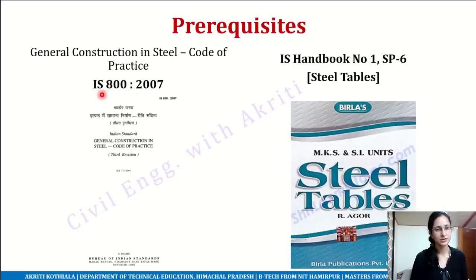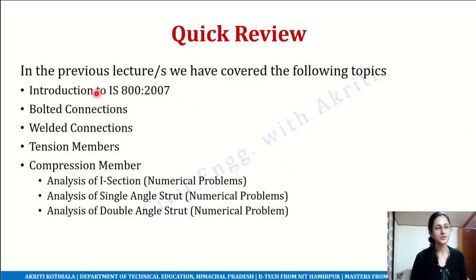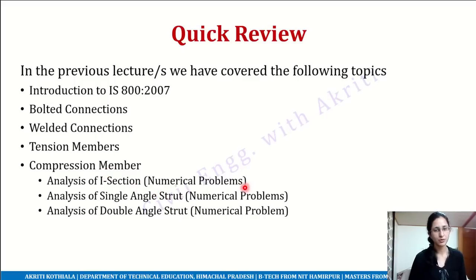The prerequisites for this subject are IS 800-2007 and steel tables of any standard publication. So far we've discussed introduction to IS 800-2007, bolted connections, welded connections, tension members, and in compression members we've completed analysis of columns using an I-section with a numerical problem, analysis of single angle strut, a numerical problem based on it, and analysis of double angle strut with a numerical problem.